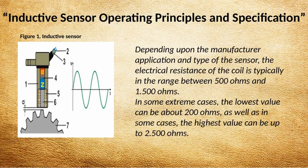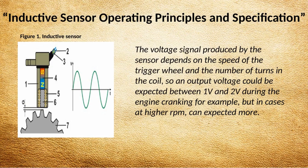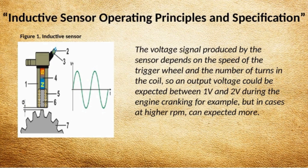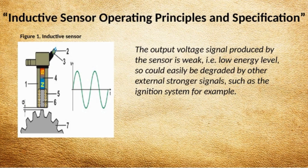Depending upon the manufacturer application and type of sensor, the electrical resistance of the coil is typically in the range between 500 ohms and 1,500 ohms. In some extreme cases, the lowest value can be about 200 ohms, and in some cases the highest value can be up to 2,500 ohms. The voltage signal produced depends on the speed of the trigger wheel and the number of turns in the coil, so output voltage could be expected between 1 volt and 2 volts during engine cranking, but at higher RPM can be expected more. The output voltage signal is weak — low energy level — and could easily be degraded by other external stronger signals, such as the ignition system.